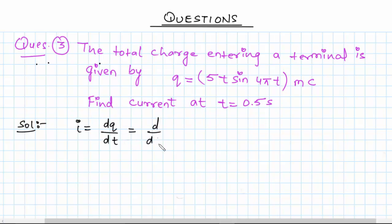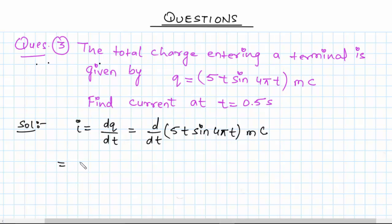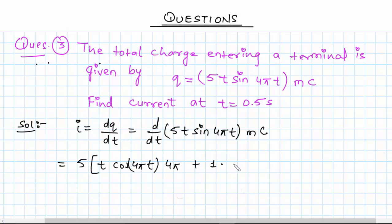Now we will substitute the value of q and differentiate it with respect to t. So d over dt of 5t times sine 4 pi t. This will be 5 times t times cos of 4 pi t, and then we differentiate 4 pi t and multiply, so it will be 4 pi, plus 1 times sine of 4 pi t.